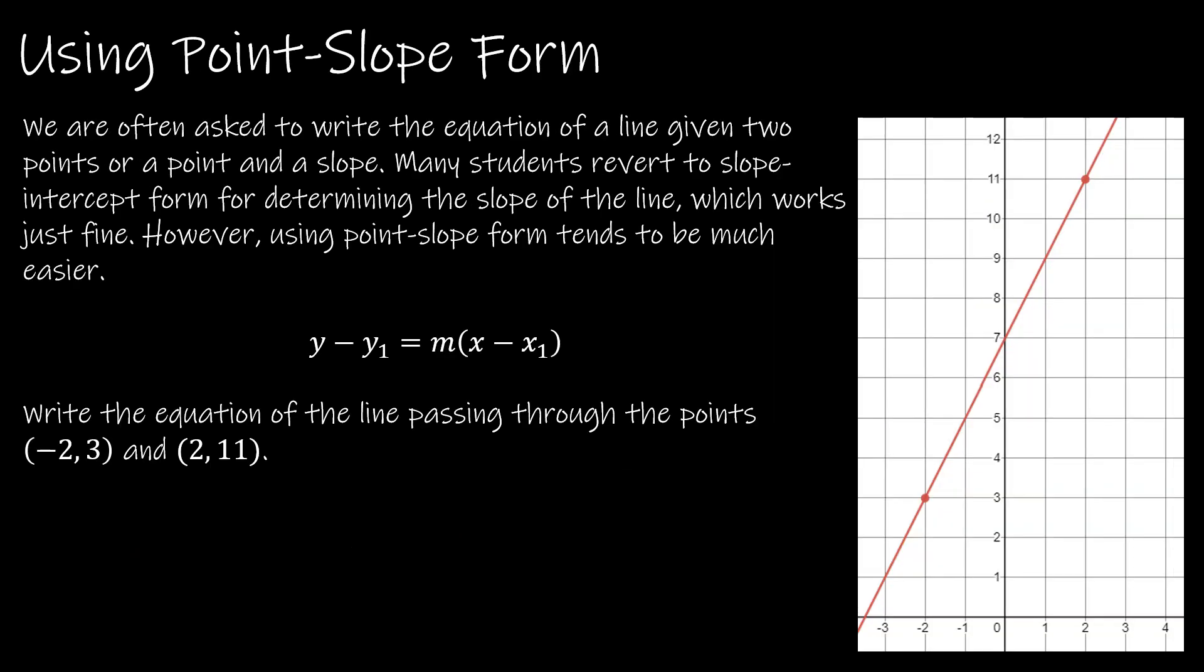Often my students are very familiar with slope-intercept form, but not with point-slope form. So if they are confronted with a question like this where I give them two points and say, please write the equation of the line, they will use slope-intercept form. Of course, the first thing we would do is find slope. That's y2 minus y1 over x2 minus x1, which essentially just means subtract the y values and subtract the x values. So I'm going to find the slope as 11 minus 3 over 2 minus negative 2. Minus negative really just means plus. So 11 minus 3 is 8. 2 plus 2 is 4. My slope is 2.